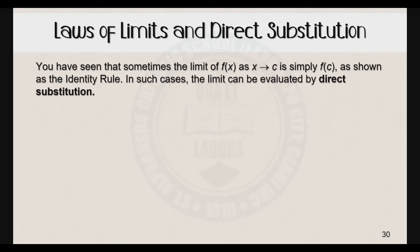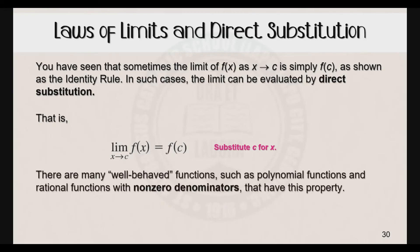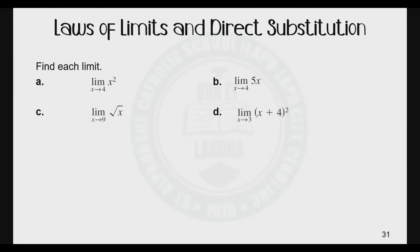You have seen that sometimes the limit of f of x as x approaches c is simply f of c, as shown in the identity rule. In such cases the limit can be evaluated by direct substitution — that is, the limit of f of x as x approaches c is equal to f of c. All you need to do is substitute c for every x in the function. Many well-behaved functions such as polynomial functions and rational functions with non-zero denominators have this property.